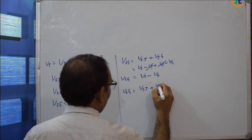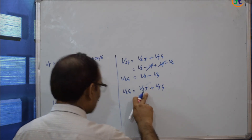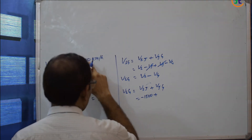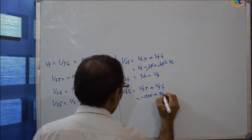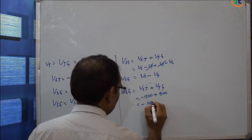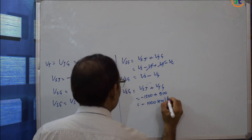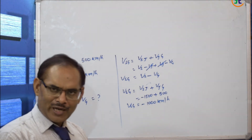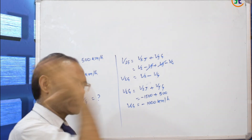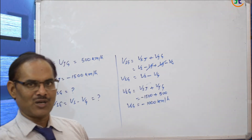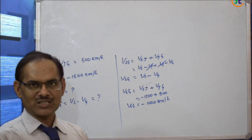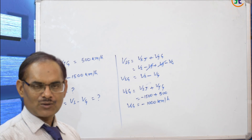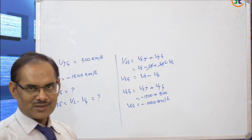So, velocity of smoke with respect to the ground equals velocity of smoke with respect to jet plane plus velocity of jet plane with respect to ground, which equals minus 1500 kilometers per hour plus 500 kilometers per hour, which equals minus 1000 kilometers per hour. This is the speed of smoke with respect to the ground. Since the jet moves in a straight path, this is a one-dimensional problem.